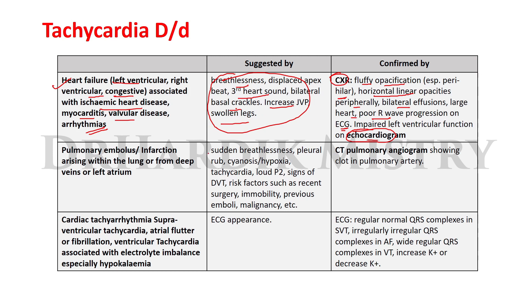When tachycardia occurs with sudden breathlessness, pleural rub, signs of hypoxia, loud P2, signs of deep venous thrombosis, and risk factors such as recent surgery, immobility, previous emboli, or malignancy, confirmed by CT pulmonary angiogram showing a clot in the pulmonary artery — then the diagnosis is pulmonary embolism or infarction arising within the lung, from deep veins, or from the left atrium.